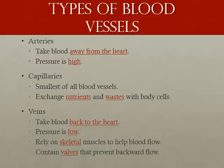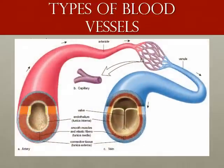Here's a diagram showing the structural differences between arteries, capillaries, and veins. The color of the vessels is to indicate the concentration of oxygen in the blood — red being high concentration, blue being low concentration, and purple for where the oxygen concentration changes. Your vessels are not actually these colors.